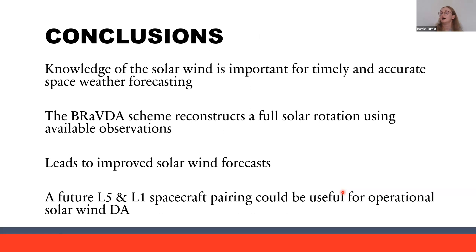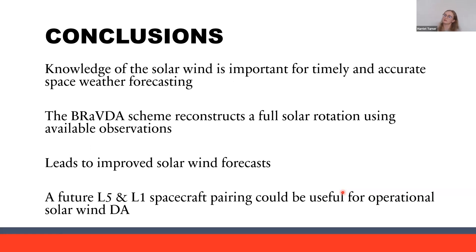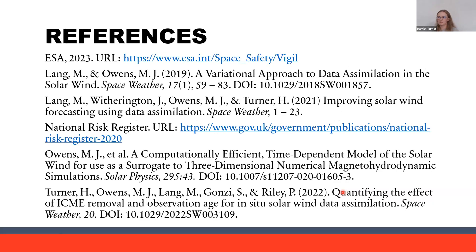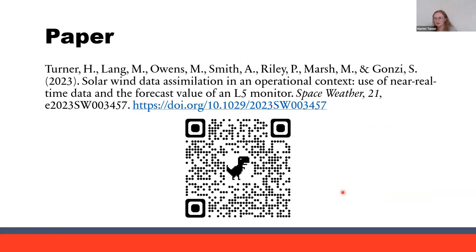To finish: knowledge of the solar wind is important for both timely and accurate space weather forecasting. The BRAVDA scheme reconstructs a full solar rotation using available observations, leading to an improved solar wind forecast. A future L5 and L1 spacecraft pairing could be useful for operational solar wind DA. This work has been written up and published in Space Weather if you'd like to read more. Thank you for listening and I'll be happy to answer any questions.